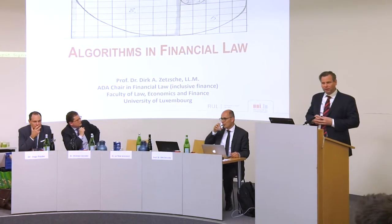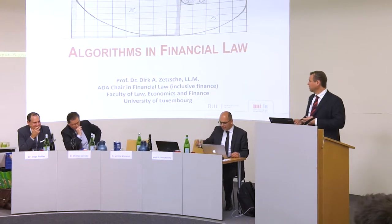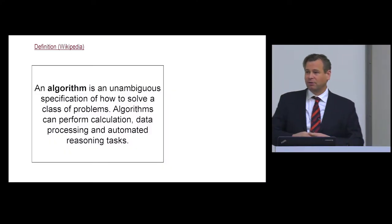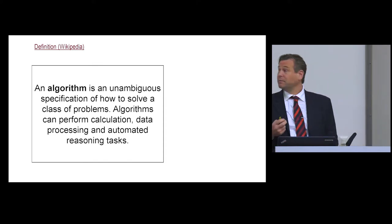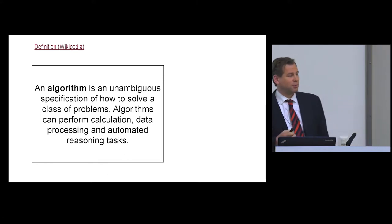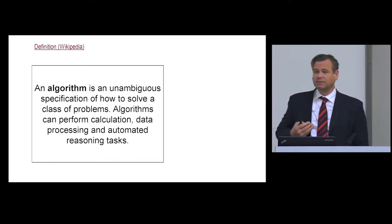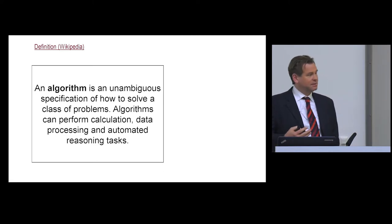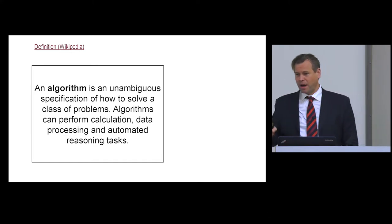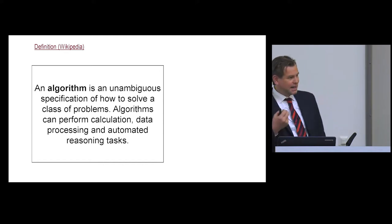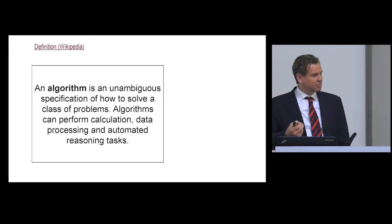Good afternoon, ladies and gentlemen. The topic is algorithms in financial law. The key problem as a lawyer is that we always need to know what to speak about. For that reason, I first try to introduce what an algorithm is. Most people have a vague idea, but for a lawyer a definition is everything. Usually an algorithm is an unambiguous specification of how to solve a class of problems. In a perfect algorithm there is no ambiguity — you have only several sets of paths, and none leads nowhere. An algorithm provides a solution; it does not provide another question.